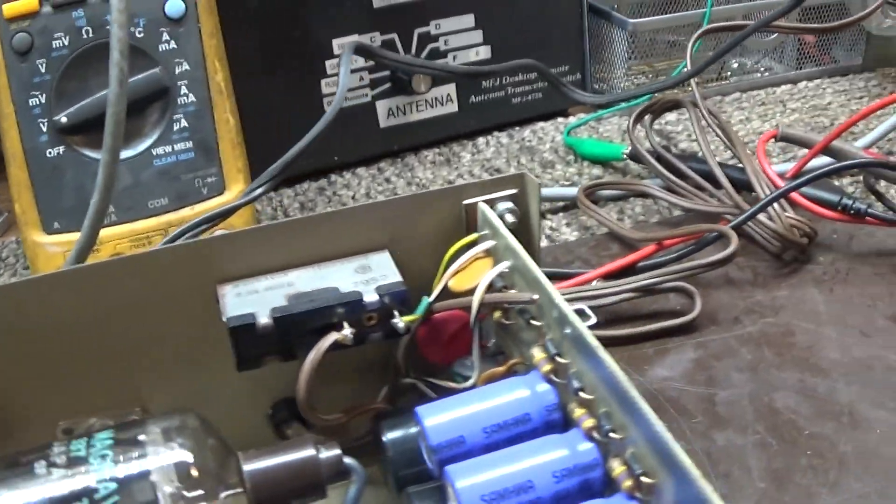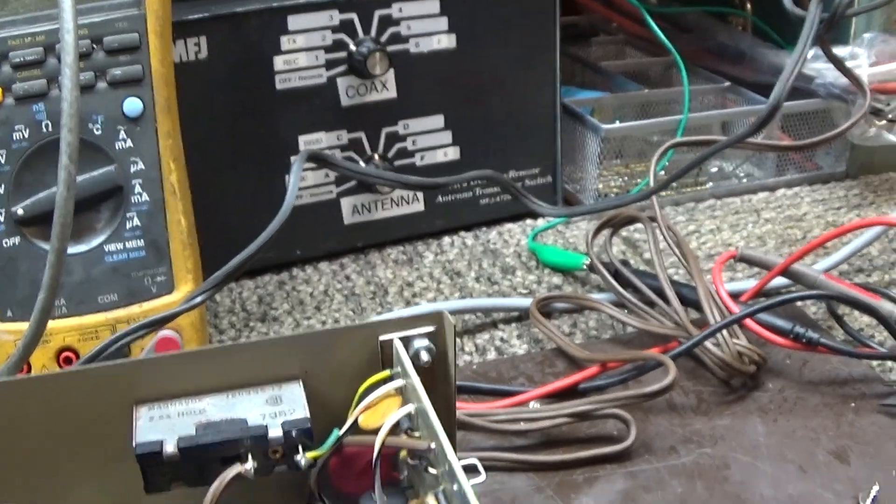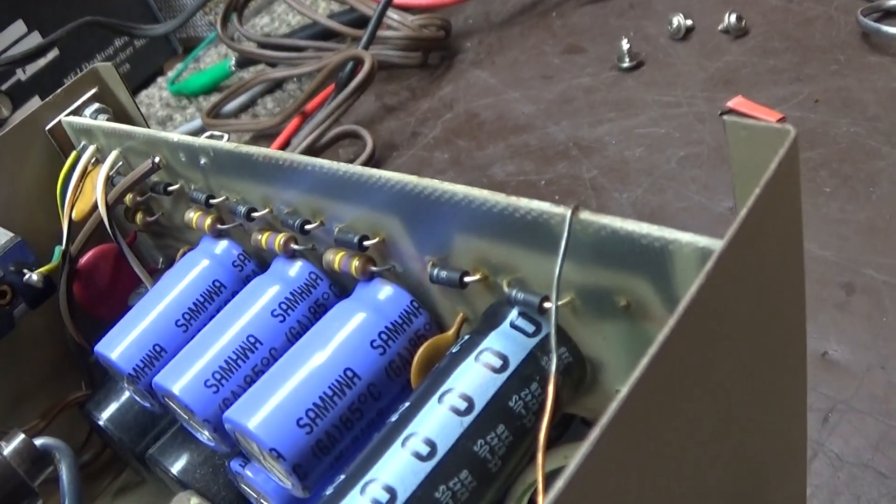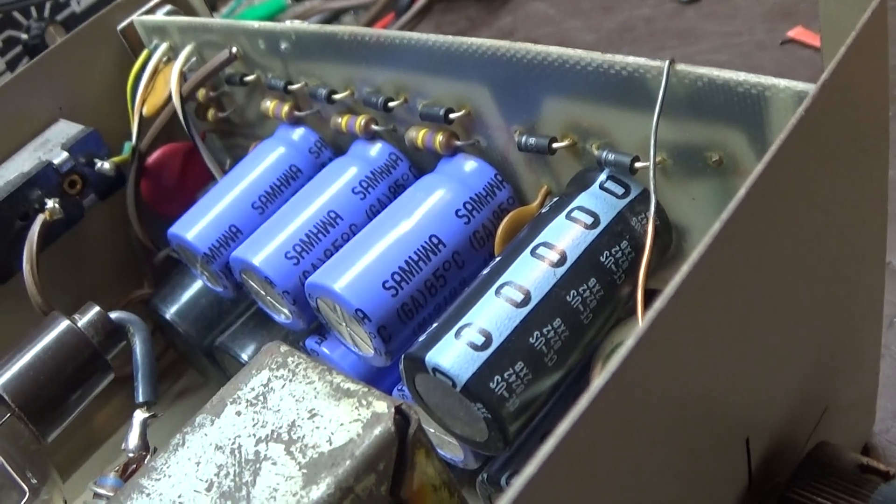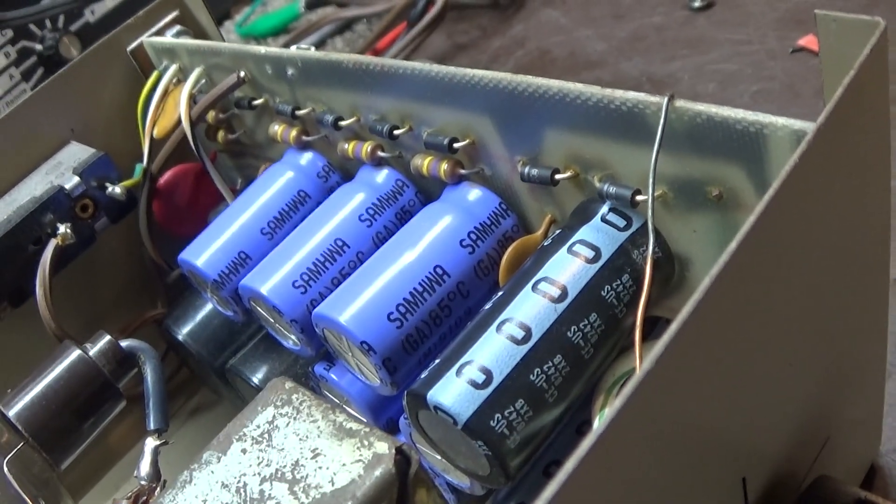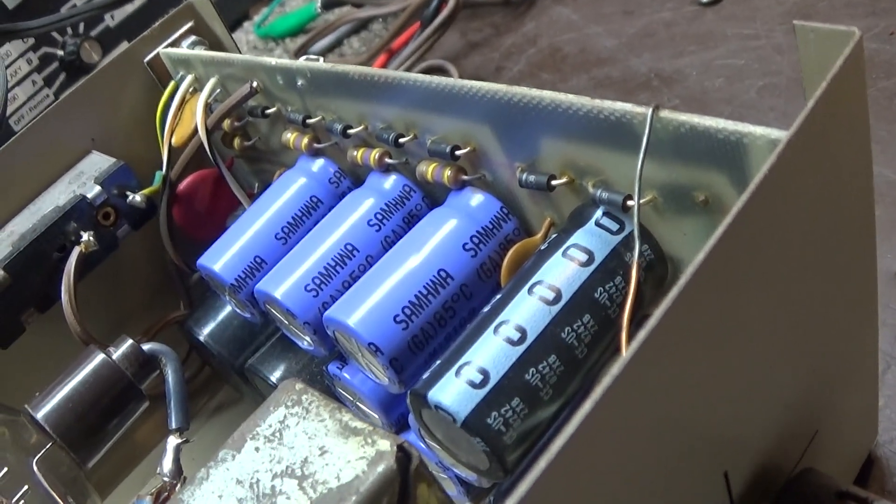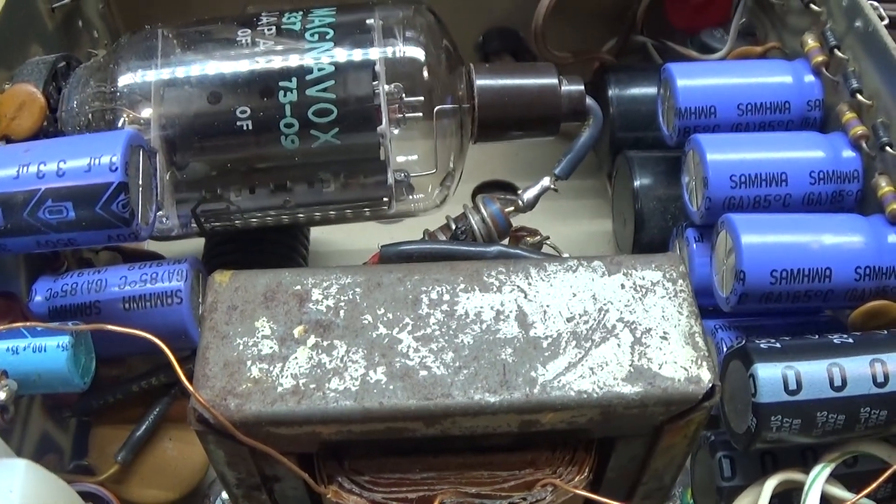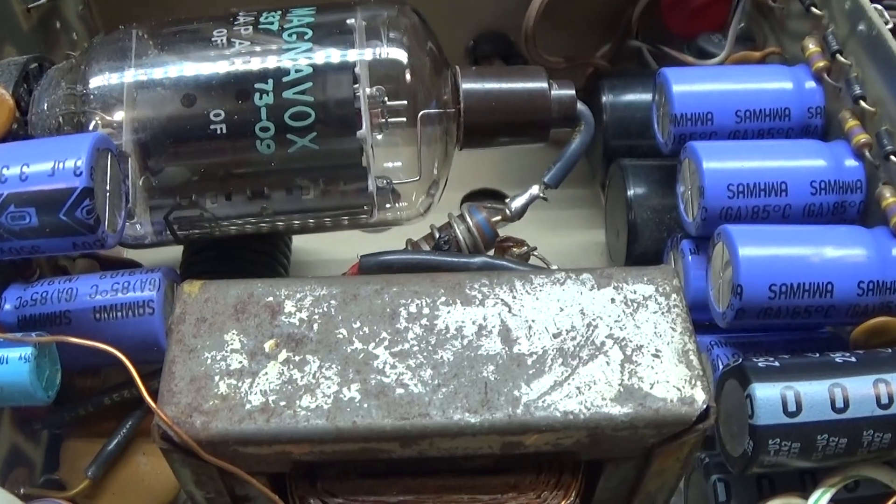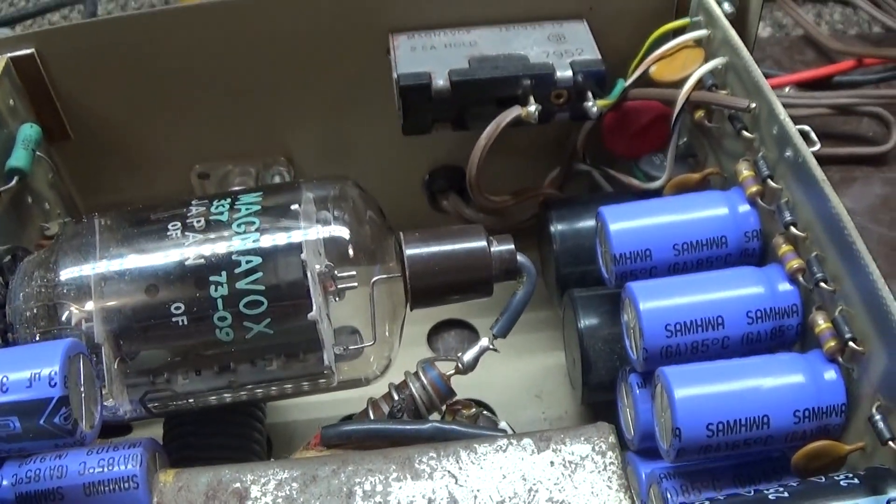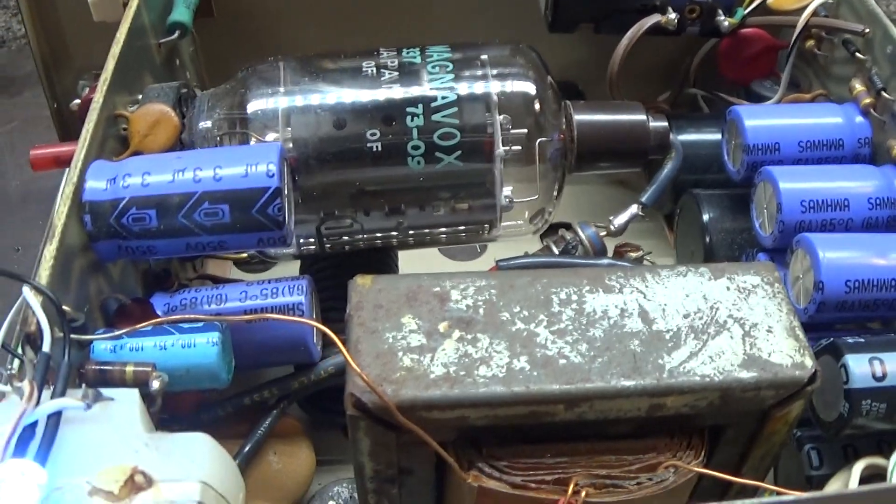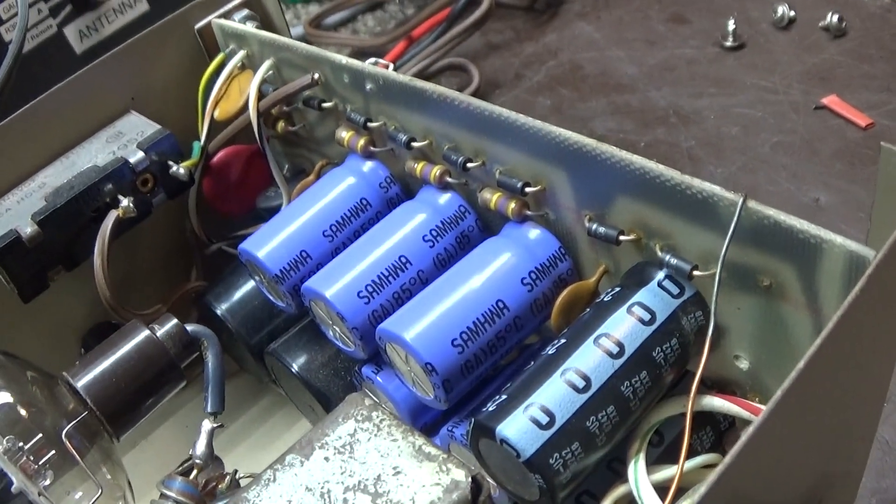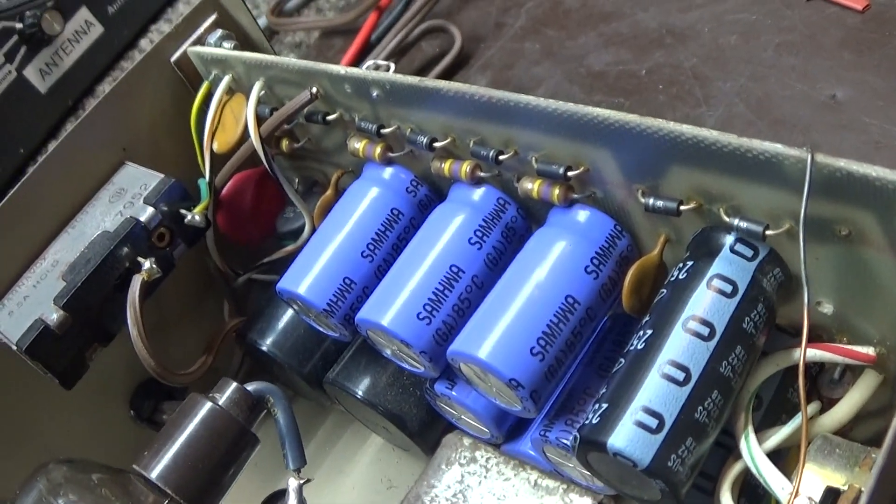One thing I don't like about it at all is that the high voltage is derived from a quadrupler or quintupler circuit. It does not have a high voltage transformer at all. It's got a little low voltage transformer for the filament and for the low voltage power to the relay and keying circuit, but the high voltage is derived directly from the line with the caps and diodes.